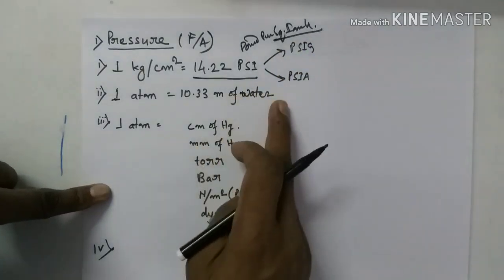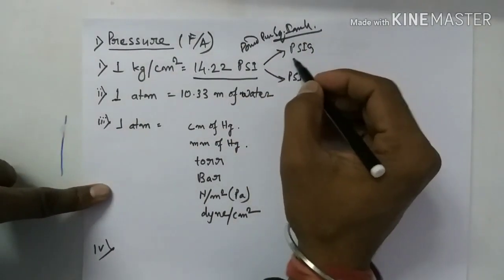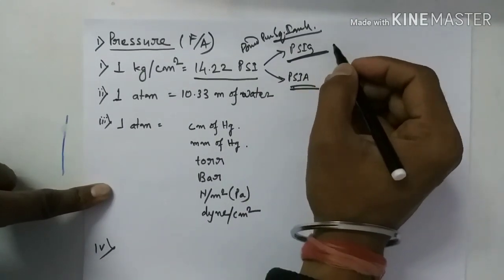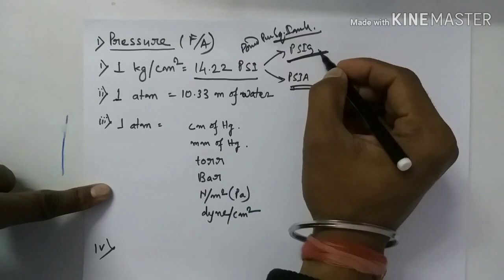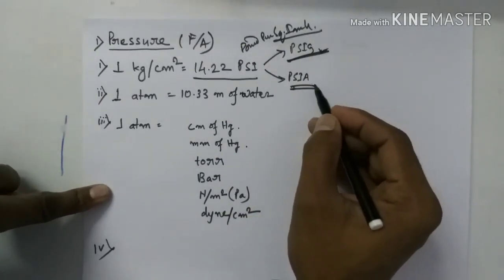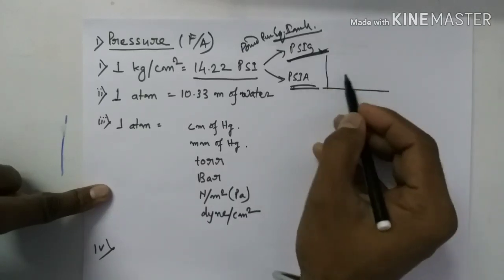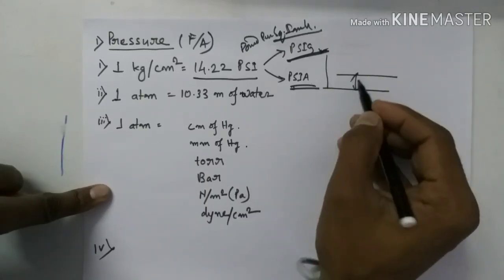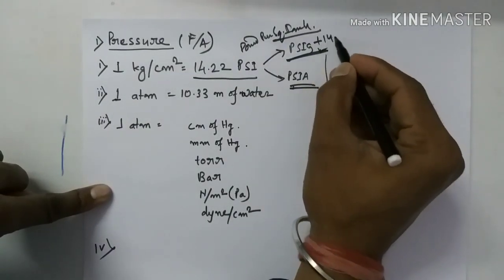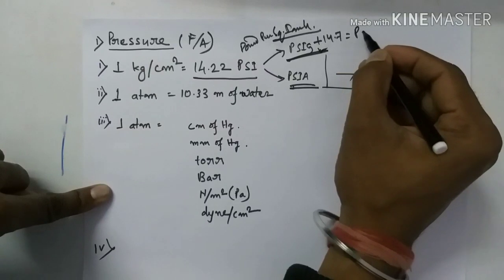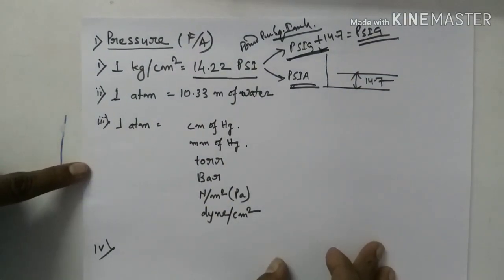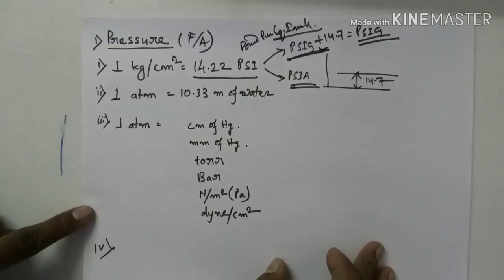PSI is further converted into two things: PSIG and PSIA. PSIG means pressure with respect to atmosphere (gauge pressure), and PSIA means pressure with respect to absolute pressure — that is, zero level. If you add 14.7 to a PSIG value, it becomes PSIA. You must keep this in mind.